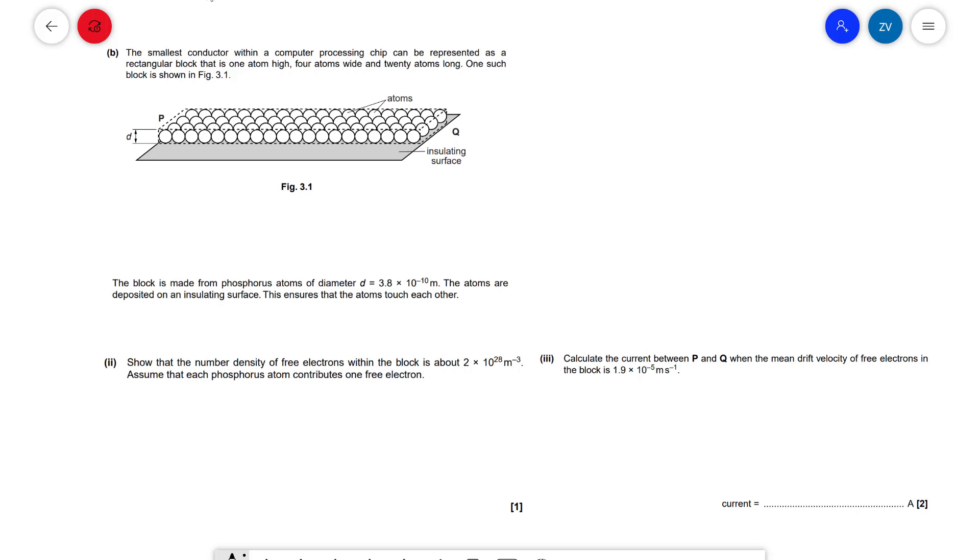Today we're going to be solving a tricky question on number density. This is a question from OCR from 2014 and involves thinking about the definition of number density and then applying it to find the drift velocity.